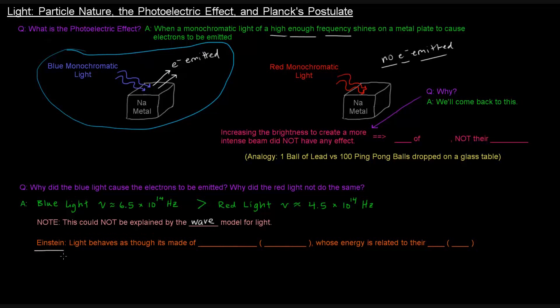So this dude, you might have heard of him, Albert Einstein, he sort of came up with the idea that light behaves as though it's made of particles, that he called photons. So photons are basically little packets or particles of light. And he said that these particles of light, these photons, had energy that is related to their frequency. And of course, if something is related to its frequency, then it must be related to its wavelength as well.